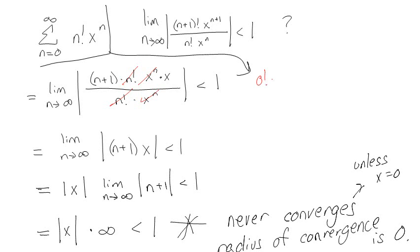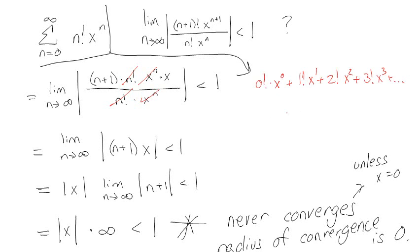If we write out the terms: 0 factorial times x to the 0, plus 1 factorial times x to the first, plus 2 factorial x squared, plus 3 factorial x cubed, and so on. That gives 1 plus x plus 2x² plus 6x³ and so forth. Clearly those numbers are getting bigger and bigger, so that series is never going to converge — radius of convergence is 0.